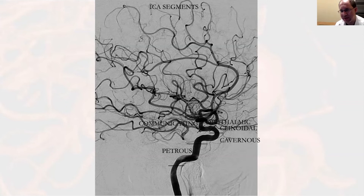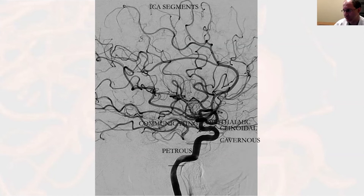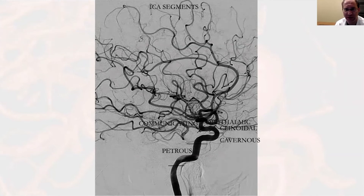If you have an aneurysm of those segments, it generally cannot cause subarachnoid hemorrhage. It can cause problems due to mass effect, but these are not locations where you can have a bleed from. Distal to the cavernous segment is the clinoidal segment, which lies between the two dural rings. Small aneurysms in this location are still functionally extradural, meaning they can't cause intracranial hemorrhage.